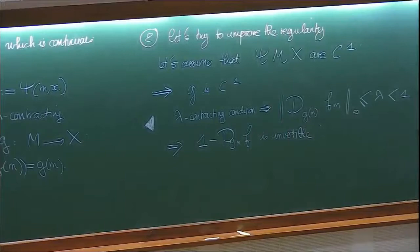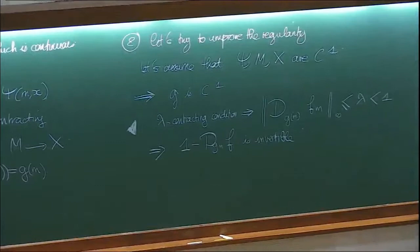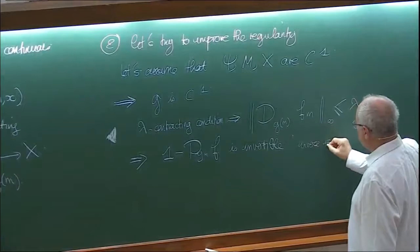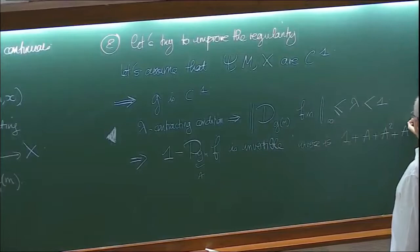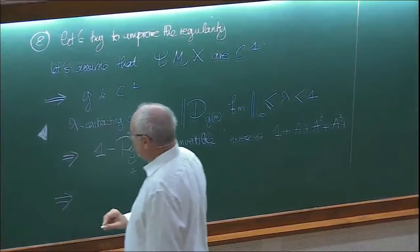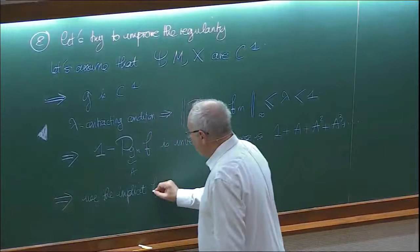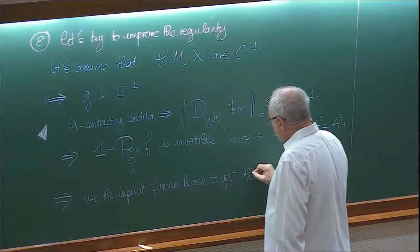That implies that 1 minus d_g(m) f is invertible — you can take the series 1 + df + df² + ... which is well-defined because of the lambda contraction condition. This implies that this object is invertible, and then you use the implicit function theorem, which actually uses Banach's theorem, to get that g is C1.